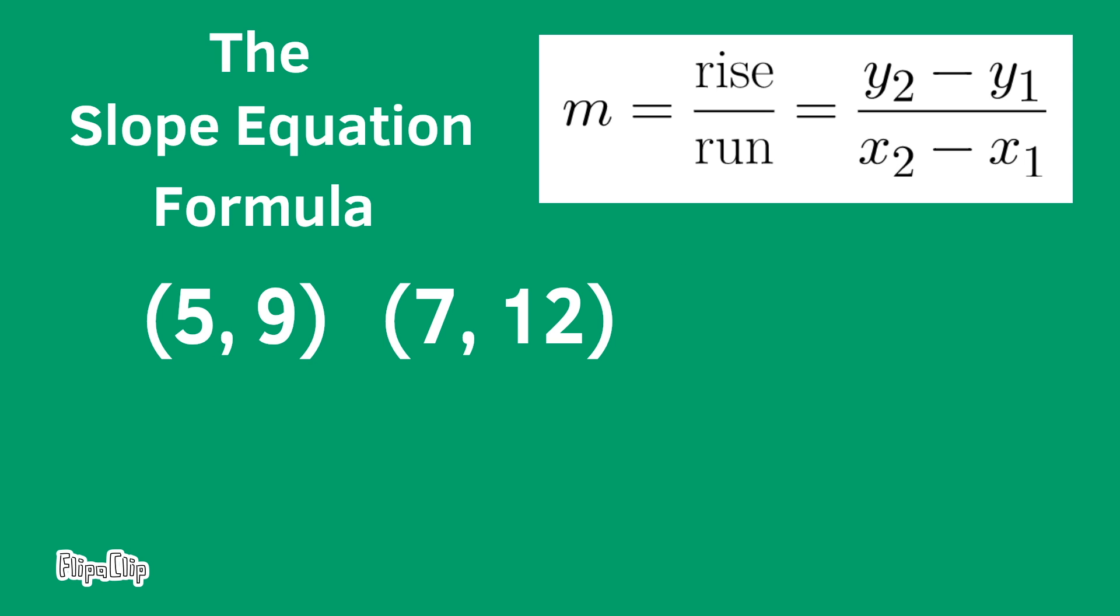Let's keep practicing with these sets of coordinates. y₂ is 12, y₁ is 9. 12 minus 9 over x₂ is 7, x₁ is 5.